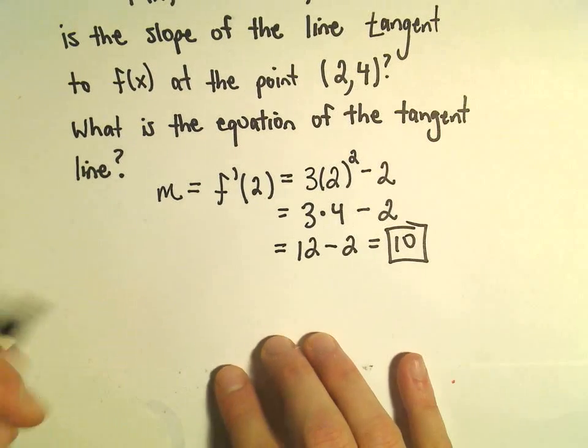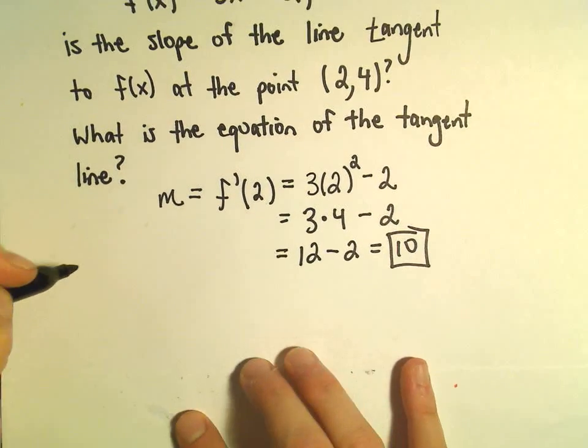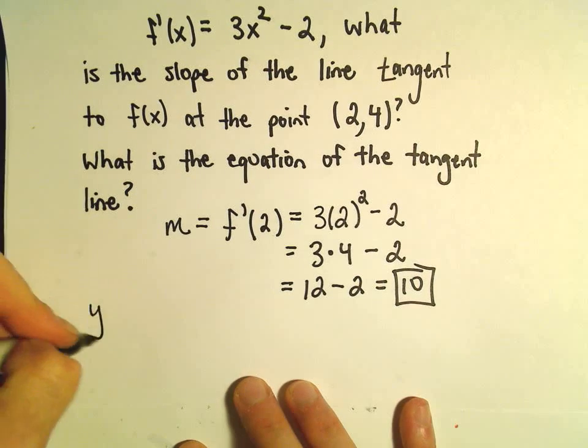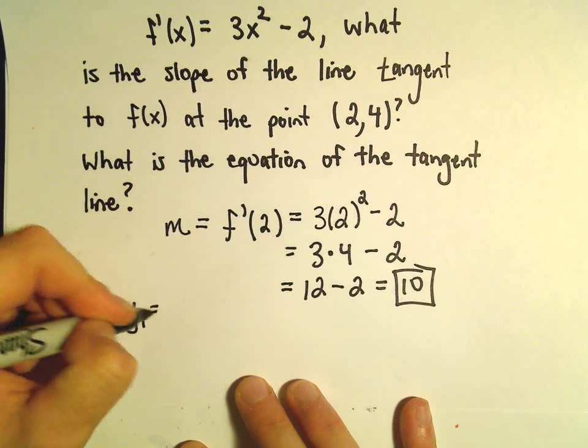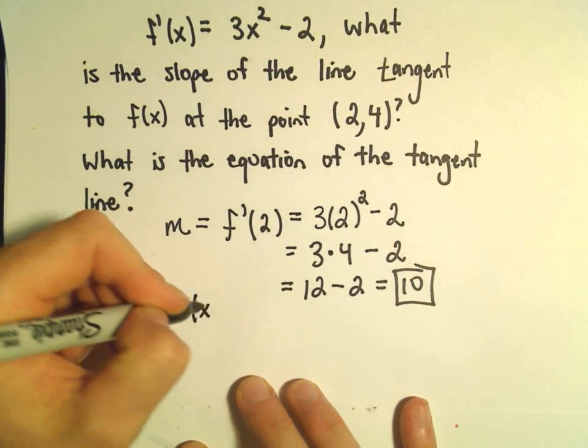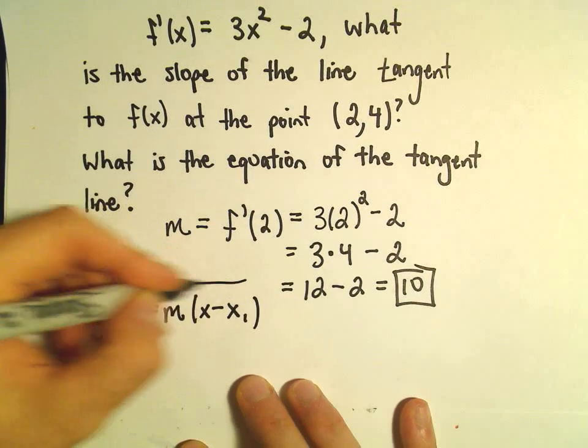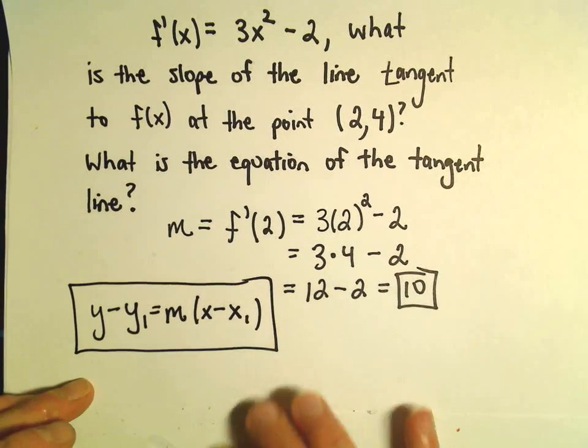Well, to get the equation of the line, remember we can just use point-slope formula here. So y minus y1 equals the slope, x minus x1. Recall this point-slope formula for a line.